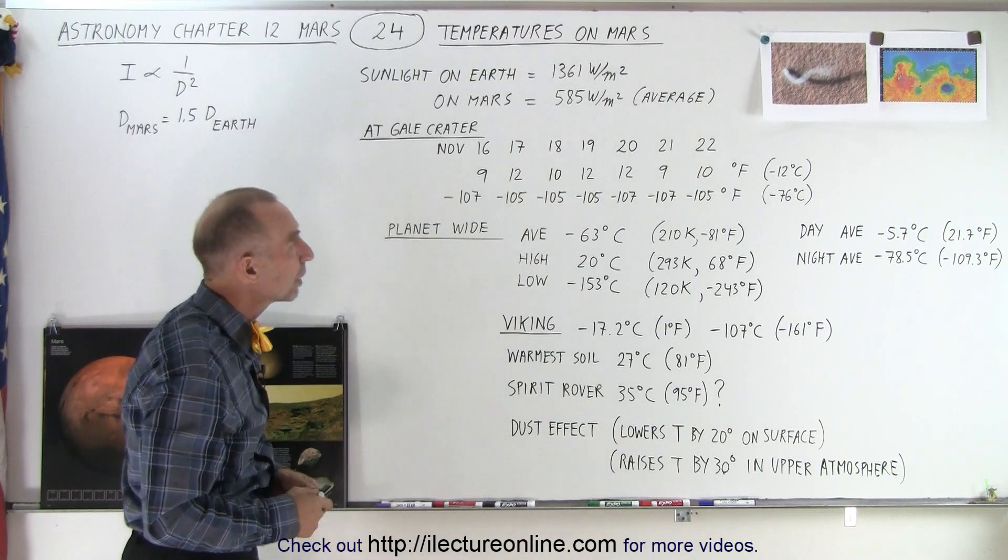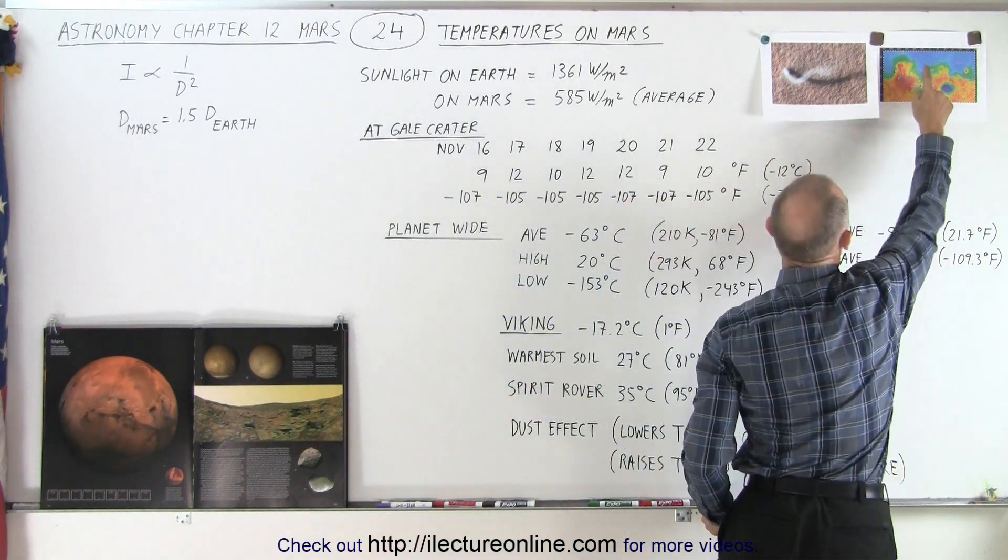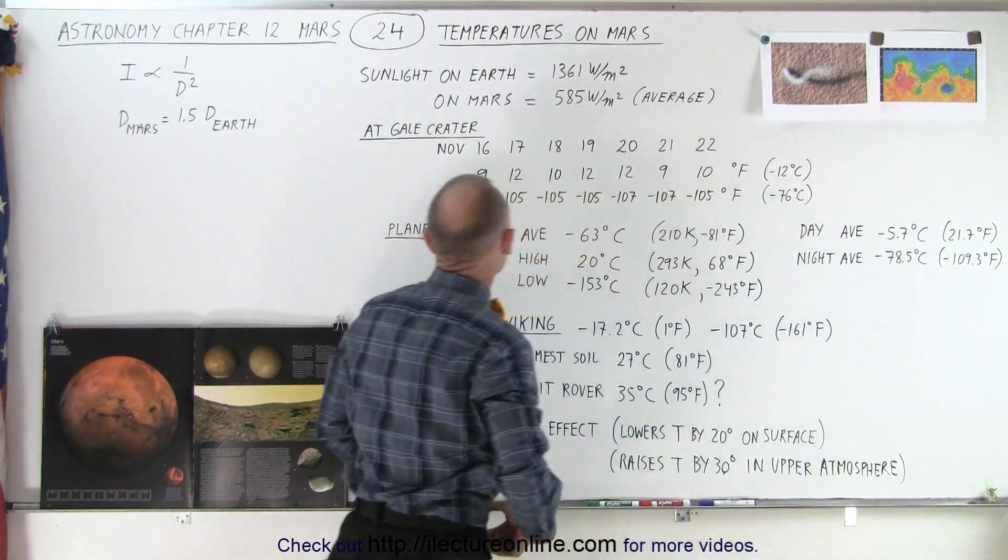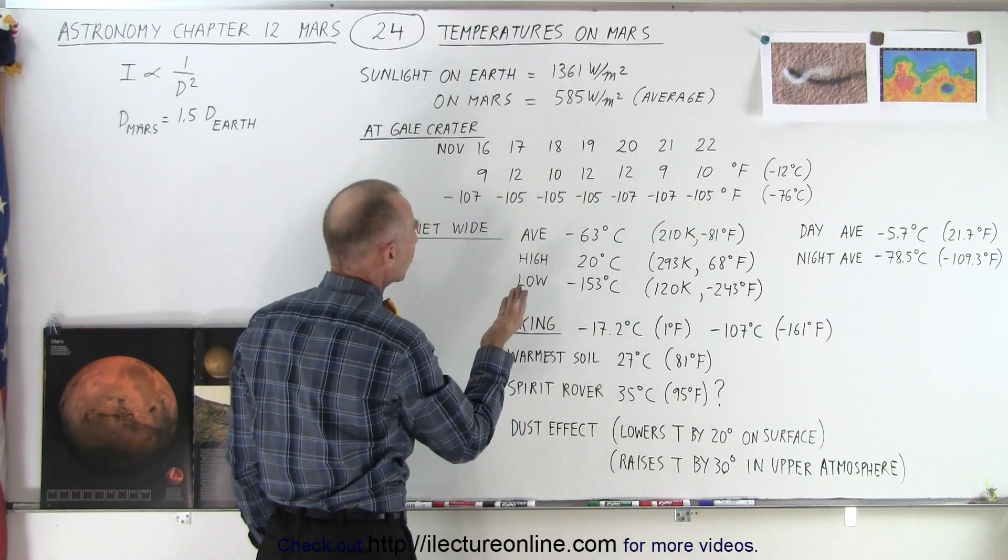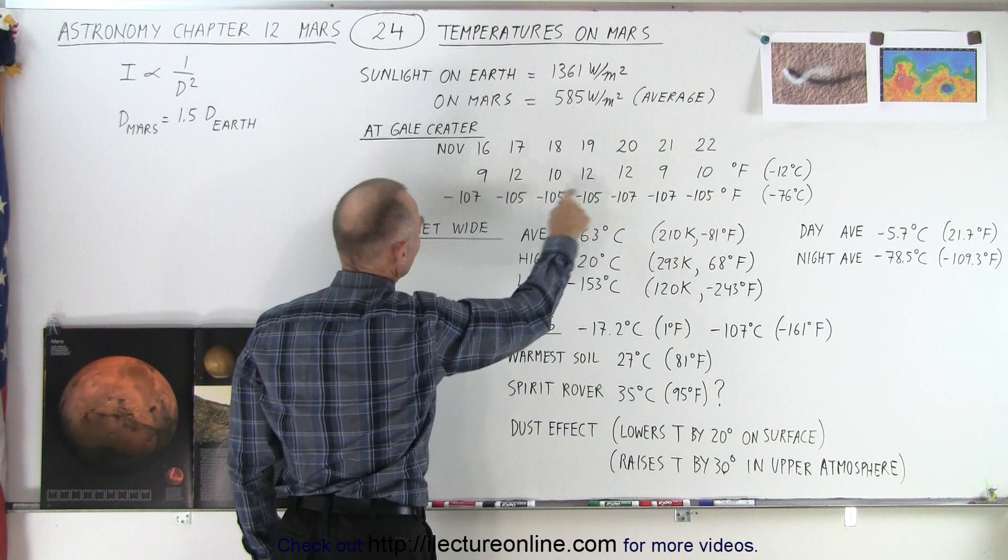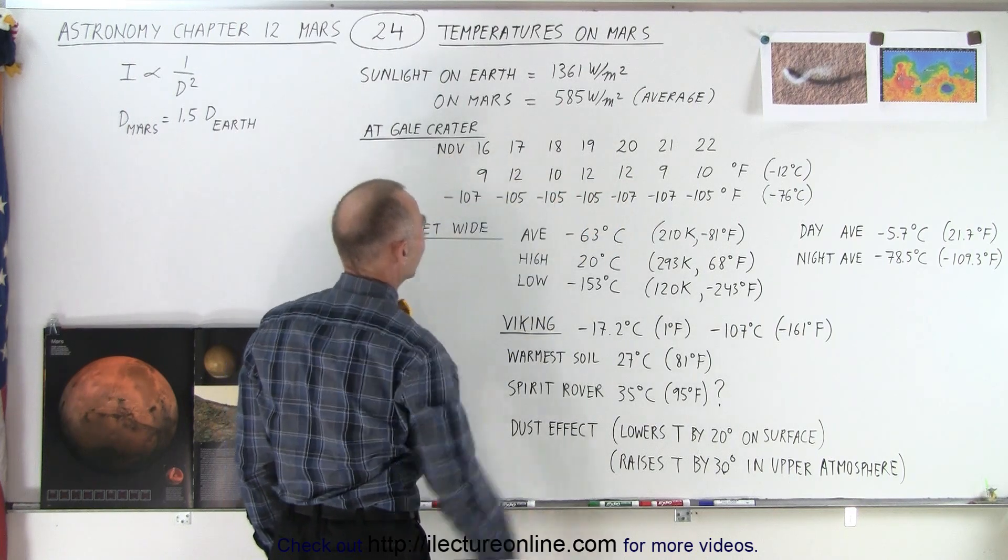At Gale Crater, which is a crater right about here at the lower elevations, temperatures were measured on consecutive days. This is really interesting—this is the daytime temperature and the nighttime temperature for the dates of November 16th, 17th, and so forth.